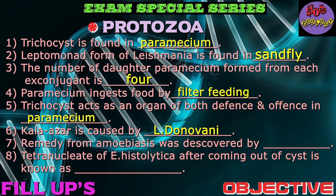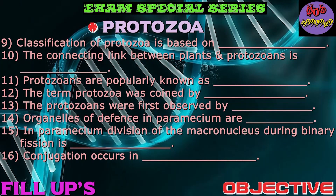Question number seven: Remedy from amoebiasis was discovered by? Answer is Saudia. Question number eight: The tetranucleate of Entamoeba histolytica, after coming out of the cyst, is known as? Correct answer is metacyst.